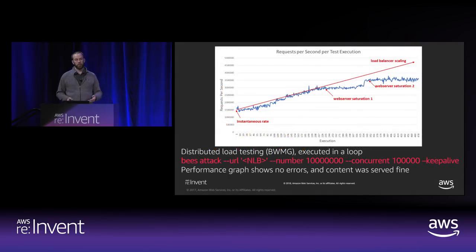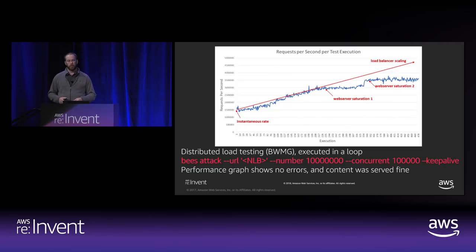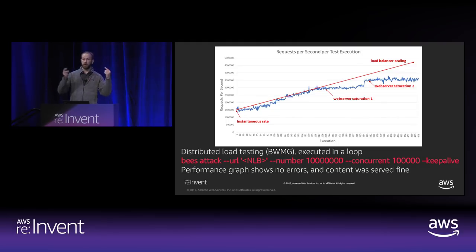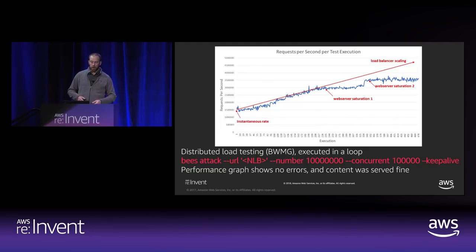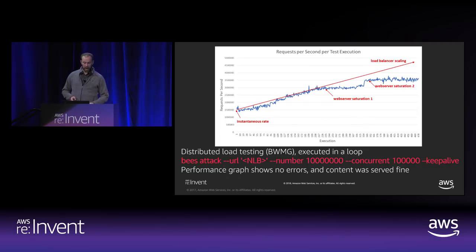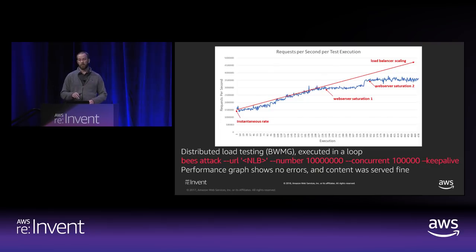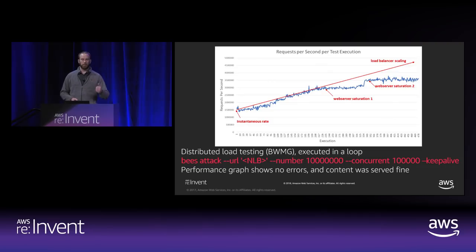We tested Network Load Balancer scaling using a tool called Bees with Machine Guns, which sends distributed sets of requests. We ran up to around a million connections, starting at 8 gigabits of bandwidth and scaling up to about 40 gigabits on the Network Load Balancer with no errors, timeouts, or 500 errors throughout the process. At 40 gigs we decided to stop wasting resources.